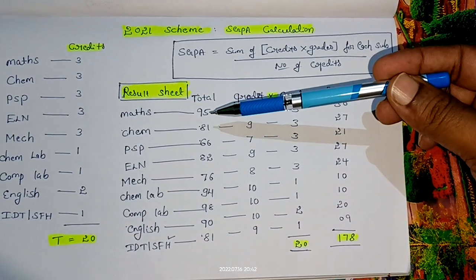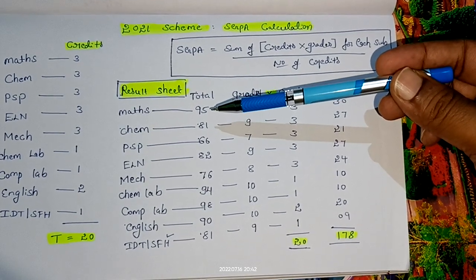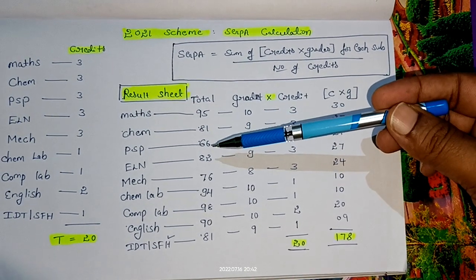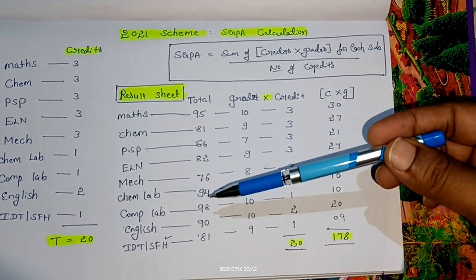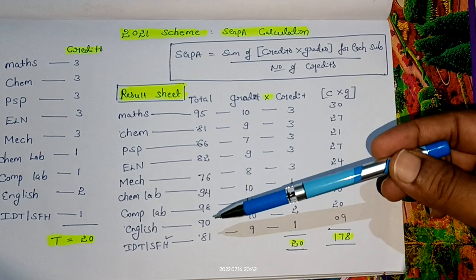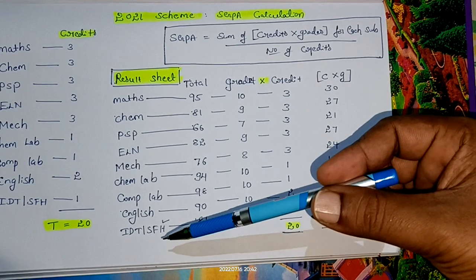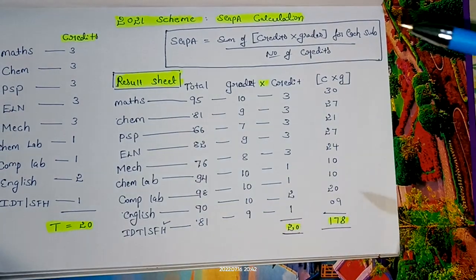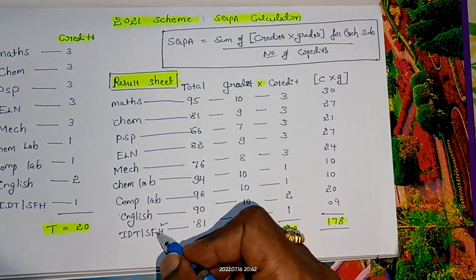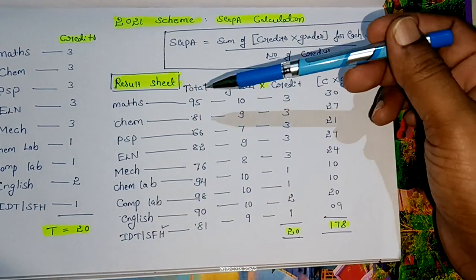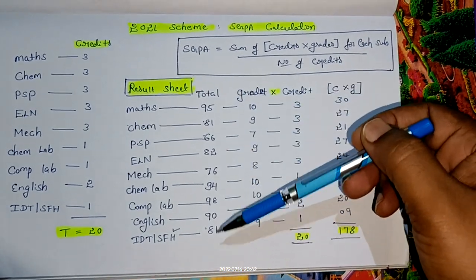Individual students should check their result sheet. For each subject, like Mathematics, see how many marks you got in total. Don't consider internal or external separately—just total marks. This student has got: Mathematics 95, Chemistry 81, PSP 66, ELN 82, Mechanical 76, Chemistry Lab 94, Computer Lab 98, English 90, and SFH 81.